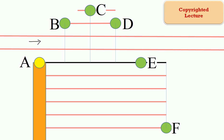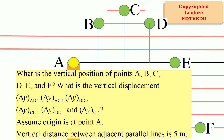Positive x is defined as to the right, positive y is defined as vertically up. What is the vertical position of points A, B, C, D, E, F?